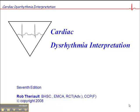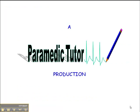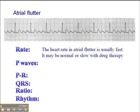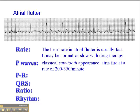This next rhythm is atrial flutter, found on page 65 of your cardiac dysrhythmia interpretation workbook. With atrial flutter, the heart rate may vary and is sometimes fast, especially with a new onset atrial flutter. But it may also be normal or slow if the patient is receiving drug therapy to keep their heart under control.